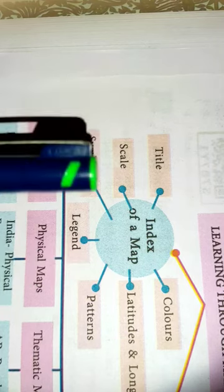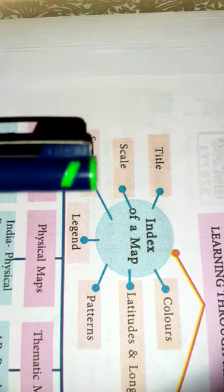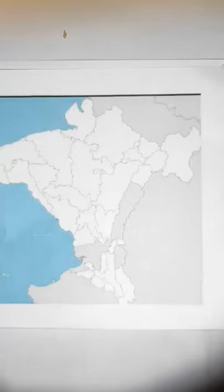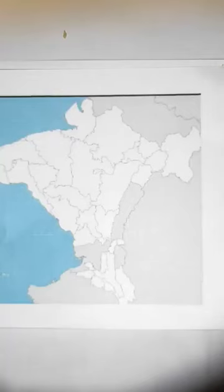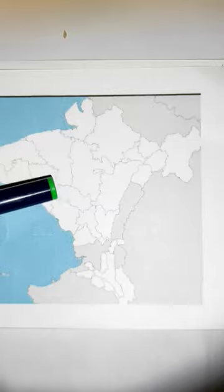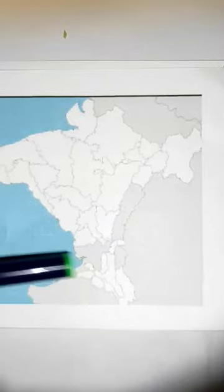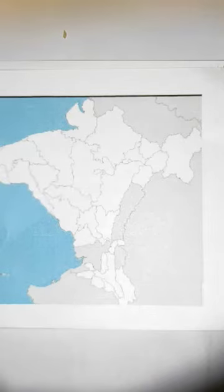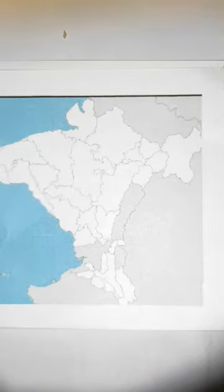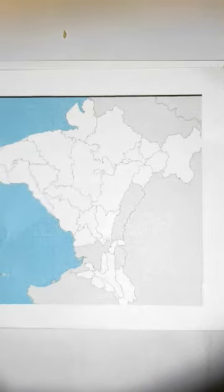Map elements: the first is title and scale, then symbols, legend, patterns, latitudes and longitudes, and colors. The first element is the title. Why do we need a title for a map? See this picture, children — this is the India map. The title gives the name of the map.